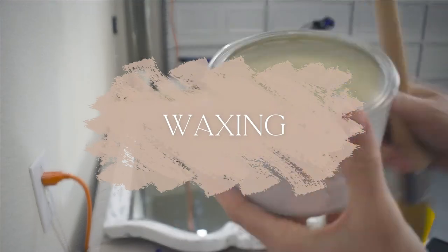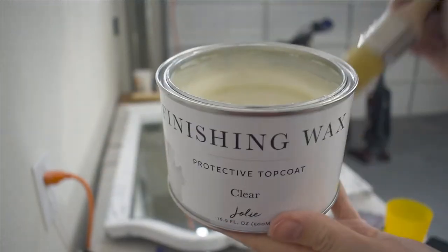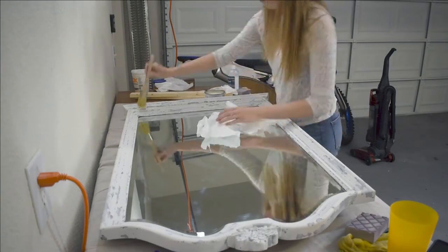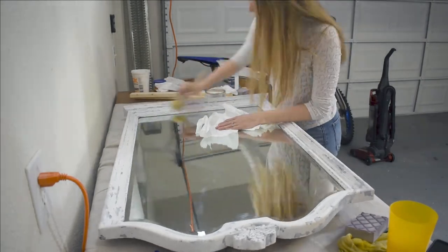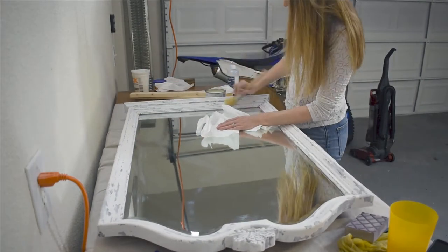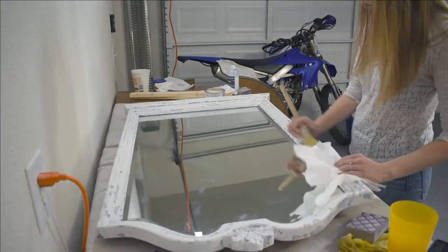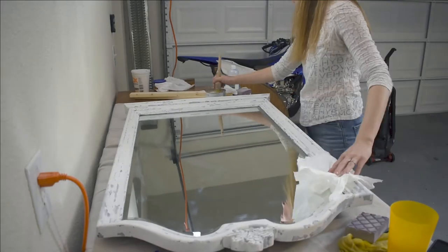I'm starting with a layer of clear wax, which will help me control any subsequent layers of colored wax better. I think wax is a good choice here because this mirror doesn't really need the protection that a tabletop might, but I still want to make sure the work I've done can live a long, happy life.